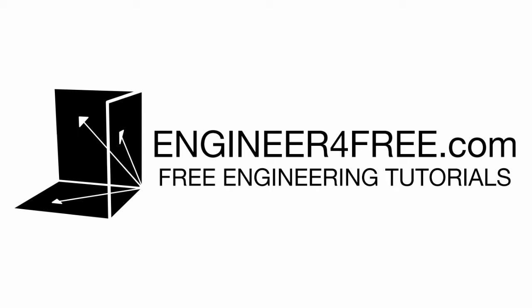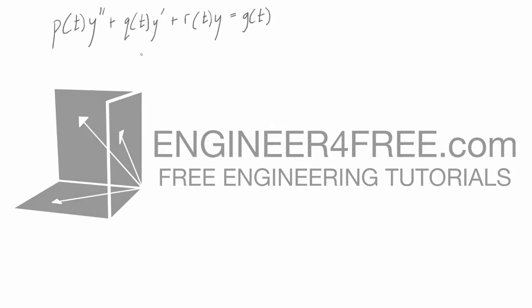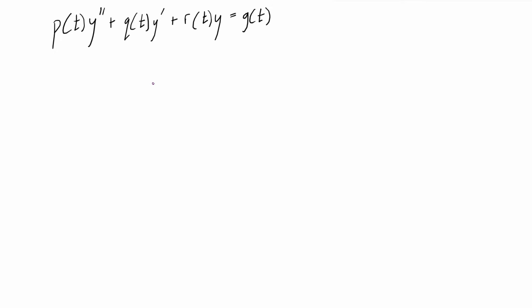Welcome back. In this video I'm just going to quickly run through how the method of undetermined coefficients works, and then in the next couple of videos we're going to go over some examples. Basically, this method can be used to find a particular solution to a second order non-homogeneous differential equation. It is pretty straightforward but it only works for a small subset of differential equations that have a certain form for g of t.